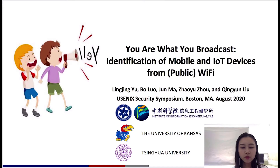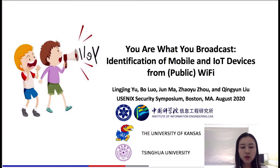Hello everyone, I'm Yu-Ling Jin from Chinese Academy of Sciences. It's my great pleasure to attend this conference and present our paper. The title of the paper is 'Your WiFi Broadcast: Identification of Mobile and IoT Devices from Public Wi-Fi.' The authors are Yu-Ling Jin, Luo Bo, Ma Jun, Zhou Zhao Yu, and Liu Qingyun. This is collaborative research among Chinese Academy of Sciences, the University of Kansas, and Tsinghua University.